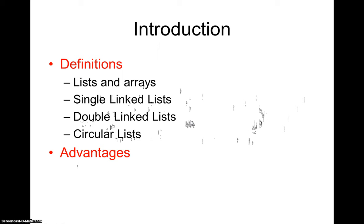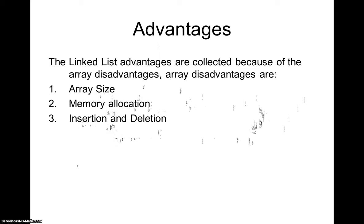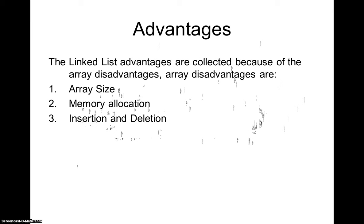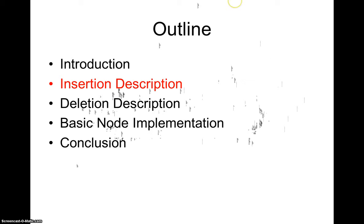Now let's look at the advantages of linked lists over arrays. Arrays have several disadvantages: sizes are fixed, dynamic memory allocation is difficult, and insertion and deletion — at the beginning, end, or any position — is quite difficult. In linked lists, these operations are easier, and the size can be defined at runtime dynamically; as you create nodes, the size increases without needing to predefine it.